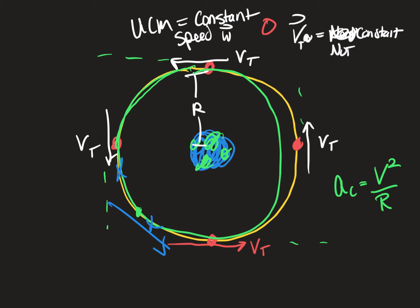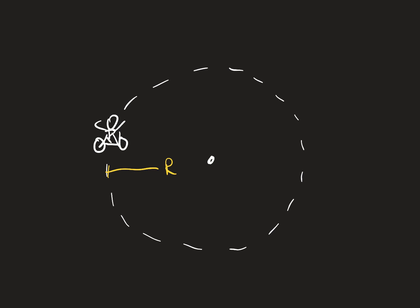That's the difference between tangential velocity and angular velocity. Let's say you have a little boy riding a bicycle, driving around his backyard at a radius of three meters. Let's say he completes one rotation in a period of 10 seconds. So it takes him 10 seconds to go all the way around this circle, and he's moving at a constant speed.